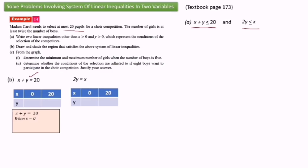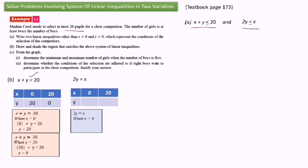When x equals 0: 0 plus y equals 20, so y equals 20. When x equals 20: 20 plus y equals 20, so y equals 0. For the second table using equation 2y equals x: when x equals 0, 2y equals 0 so y equals 0; when x equals 20, 2y equals 20 so y equals 10.